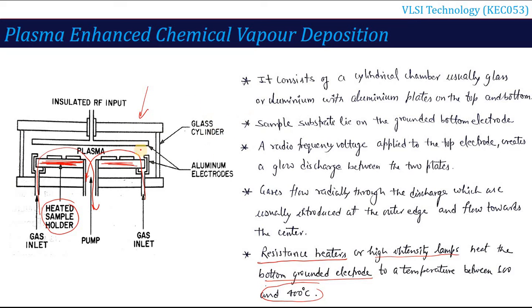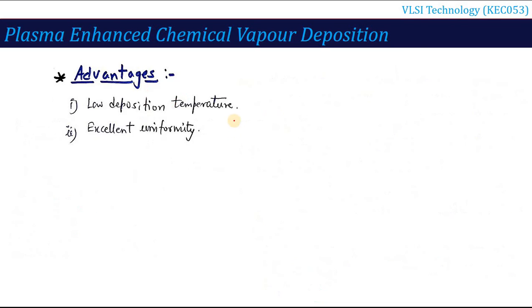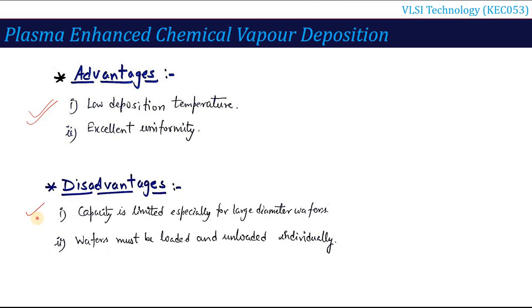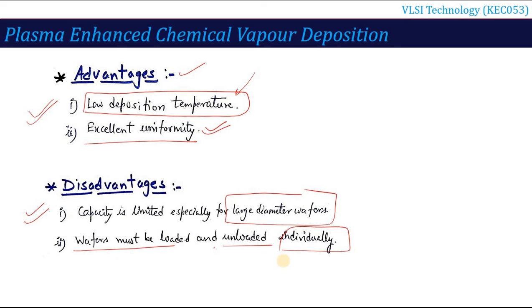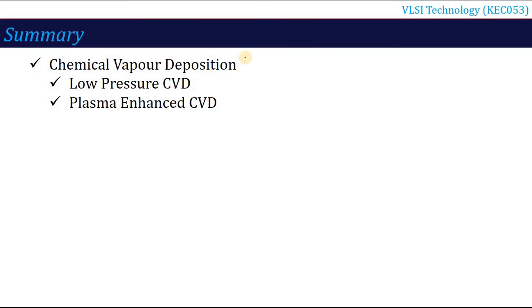Now for the advantages and disadvantages of plasma enhanced CVD: the main advantage is that the deposition process occurs at very low temperature and provides excellent uniformity. However, the disadvantage is that you cannot use large diameter wafers because the chamber capacity is limited. Additionally, wafers must be loaded and unloaded individually, which is also a significant disadvantage.